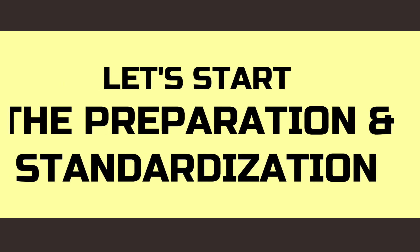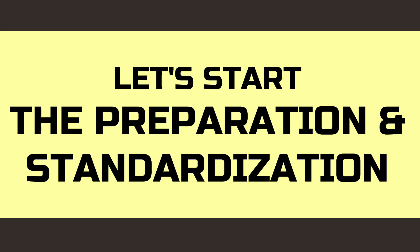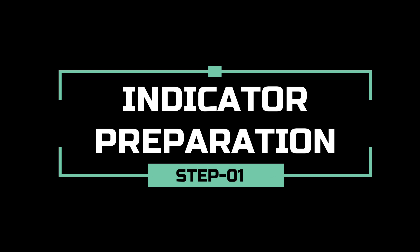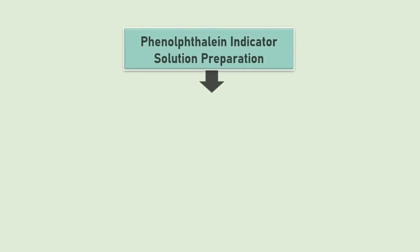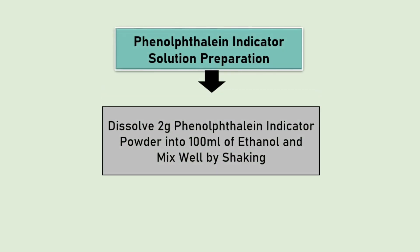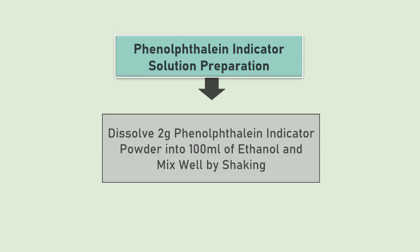Let's start the preparation and standardization of sulfuric acid solution. For the preparation of phenolphthalein indicator solution, dissolve 2 grams phenolphthalein powder into 100 ml ethanol and mix to dissolve.